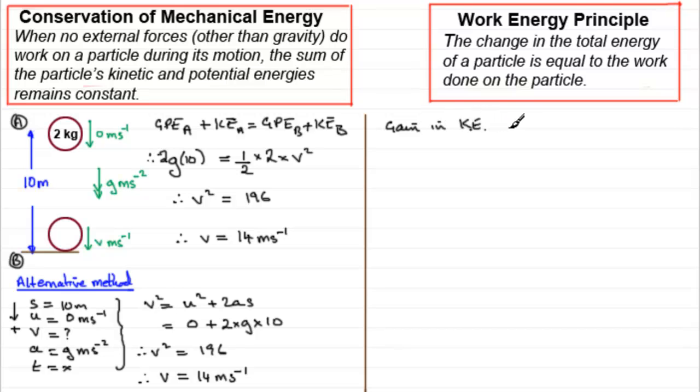Now the gain in kinetic energy is going to be equal to the final kinetic energy minus the initial kinetic energy. Well, we know kinetic energy is a half mv squared, so it's going to be half the mass, 2, times the final velocity squared. Half mv squared minus the initial kinetic energy, half times the mass, times v squared. But v was 0, so that's going to be 0 squared. And if you work that out, then it just comes out to be v squared. This term 0, half of 2 is 1, so you just get v squared. We've got that. That's the gain in KE, kinetic energy.